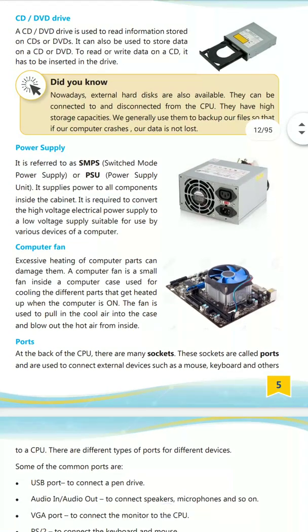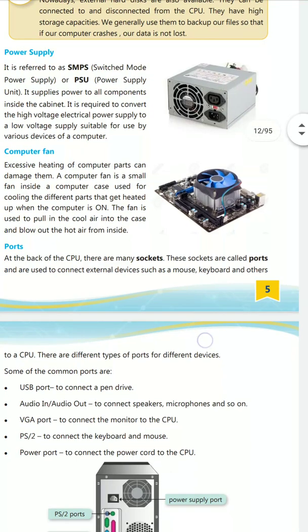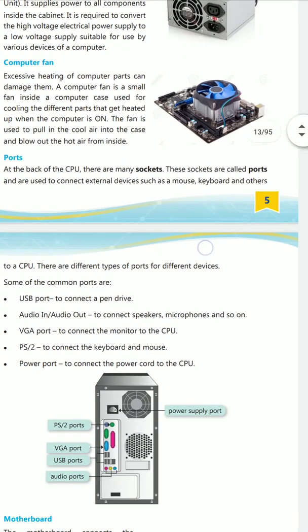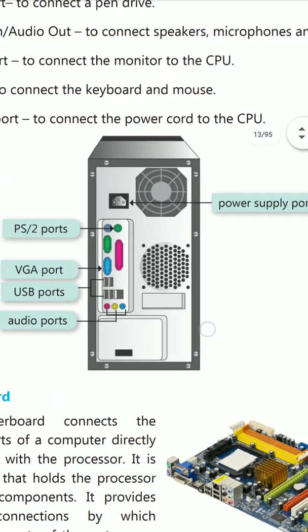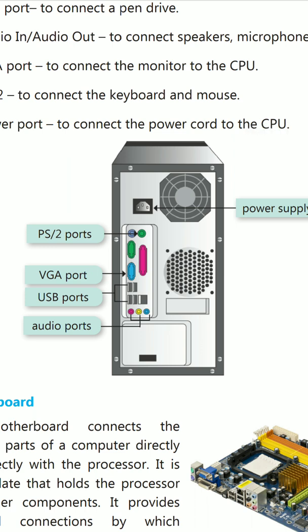Then there are ports. At the back of the CPU, there are many types of ports, also called sockets. These are used to connect external devices such as mouse and keyboard. There is a power supply port, PS2 ports for plugging in keyboard and mouse cables on older computers, VGA port for monitor cables (now replaced by HDMI), USB ports for pen drives, memory cards, and portable drives, RJ45 port, and audio ports.